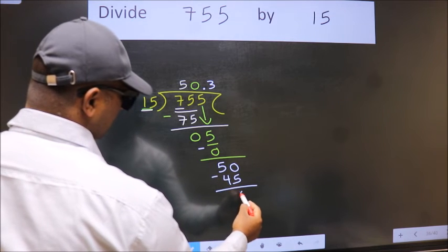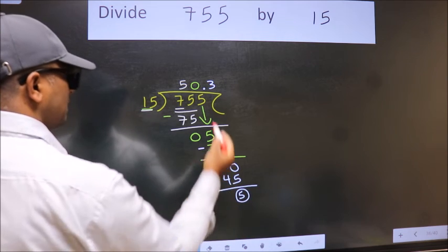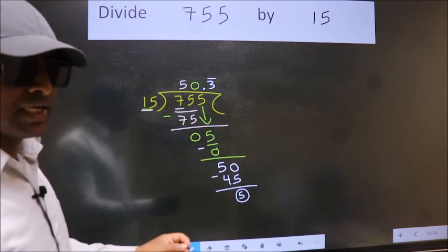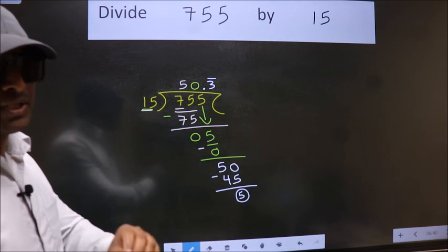Now we subtract. We got 5 again. That means we get bar on this number. Did you understand where the mistake happens? You should not do that mistake.